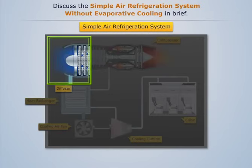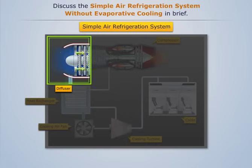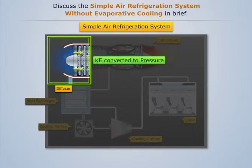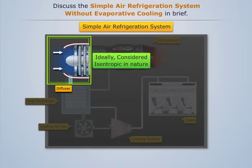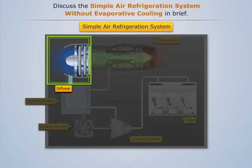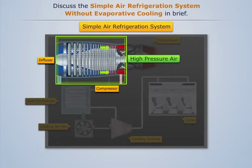The fresh air at atmospheric pressure gets sucked into the diffuser, which slows it down, thereby reducing its velocity and converting its kinetic energy into pressure. Ideally, this ram compression is considered isentropic in nature. This slightly compressed air is then further passed on to the main compressor, where it gets compressed to a higher pressure.